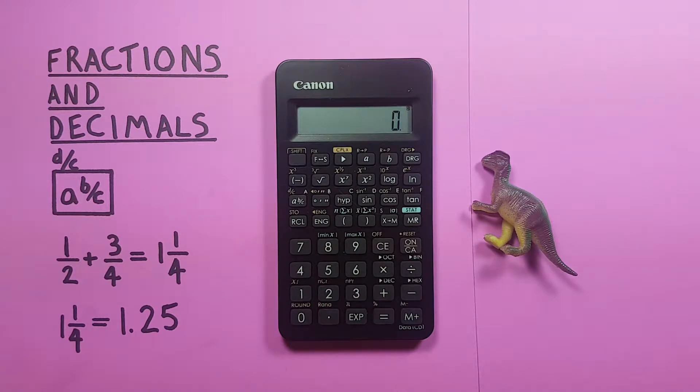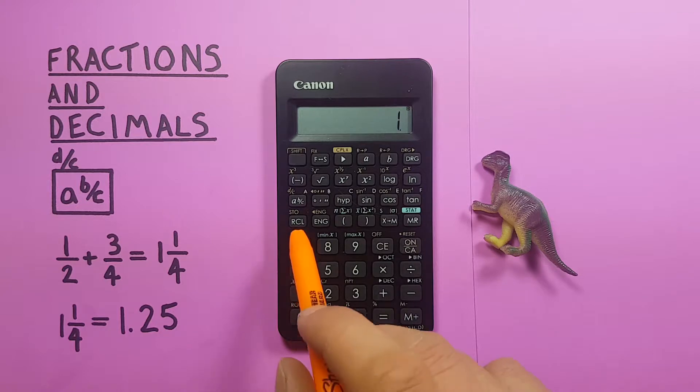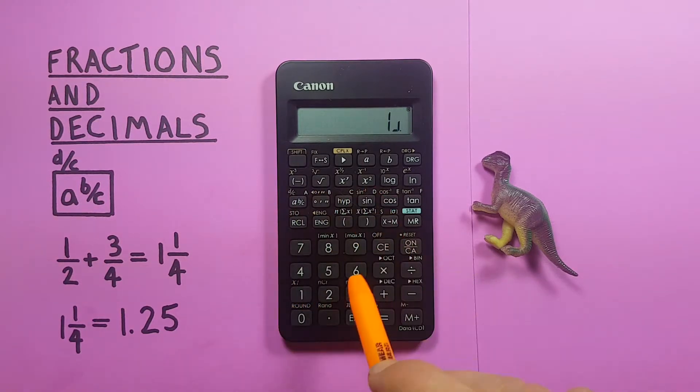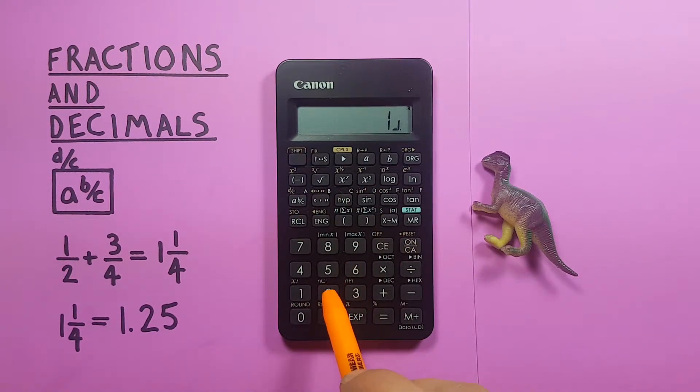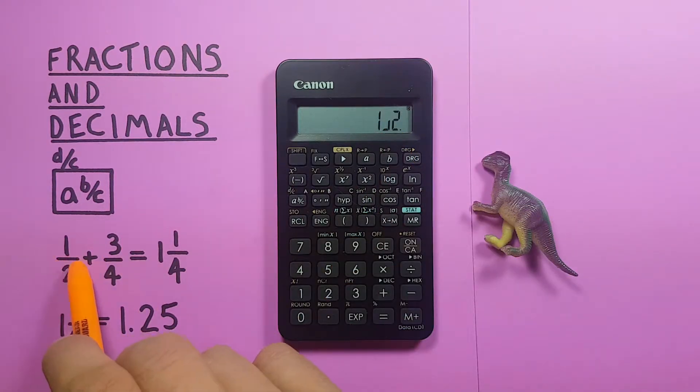To get started, if we wanted to add 1 over 2 plus 3 over 4 and find out what the result of that is as a fraction, we could enter 1 a b over c 2. You see this little symbol here that represents the line between the 1 and the 2 in that fraction.